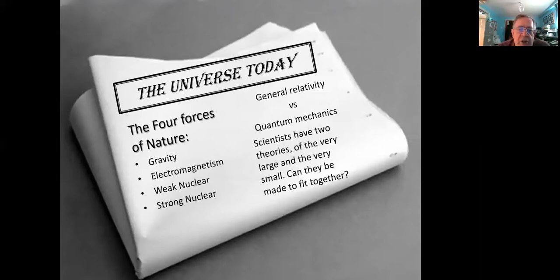And scientists have two theories that describe everything. General relativity, which describes the first of those, gravity, and quantum mechanics, which covers the other three. Our biggest problem in theoretical physics is trying to make those two into one theory that fits everything. And that's been a challenge for 50 years or more.